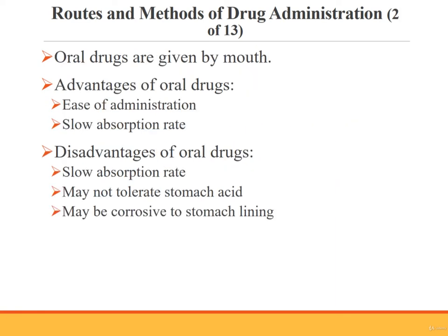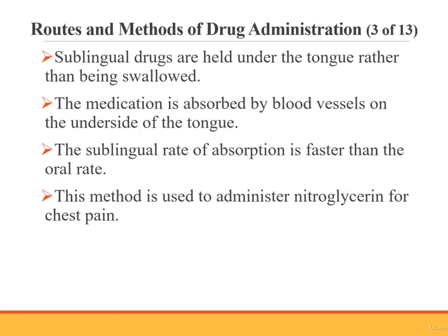Oral drugs are given by mouth. The advantages include ease of administration and a slow rate of absorption by the digestive system. The disadvantages also include slowness of absorption and destruction of some chemicals by stomach acid. In addition, some medications such as aspirin can have corrosive action on the stomach lining. Sublingual medications are held under the tongue, where blood vessels absorb the medication as saliva dissolves it. The absorption rate is quicker than oral drugs — this route is used to administer nitroglycerin for chest pain, for example.